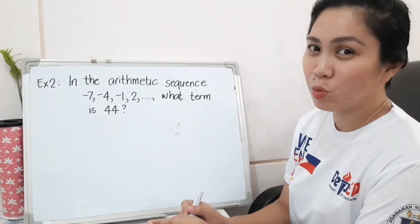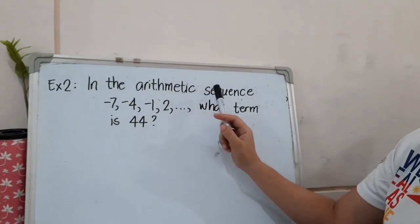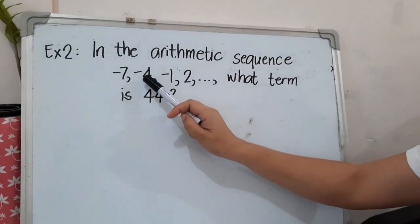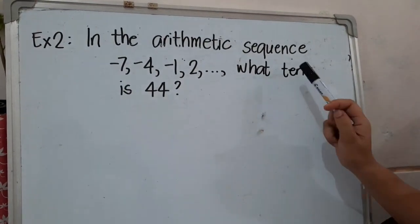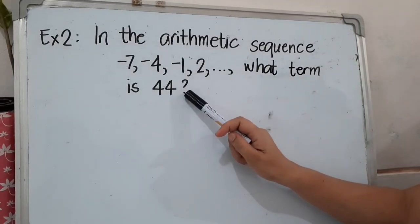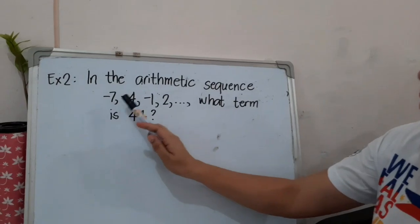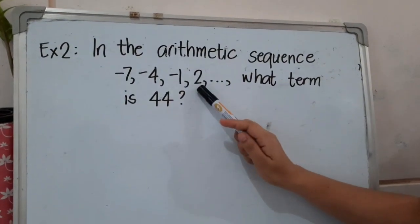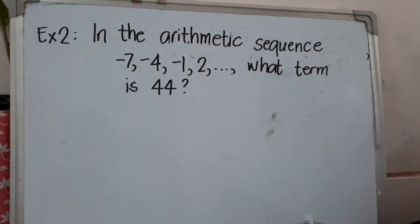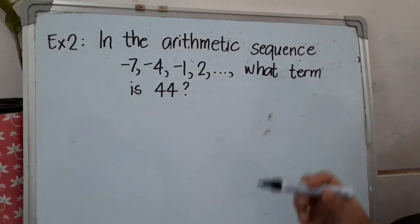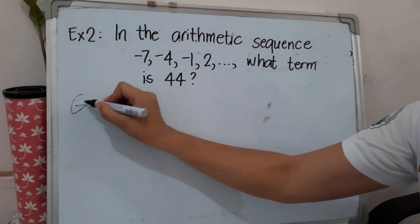Now for example number 2: in the arithmetic sequence -7, -4, -1, 2, and so on, what term is 44? In this kind of problem, the same as before, our first step is to identify the given values.